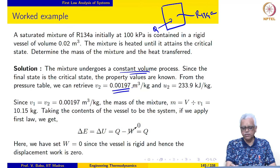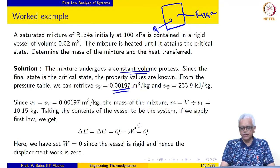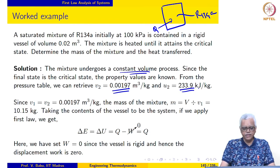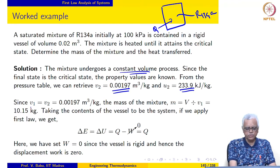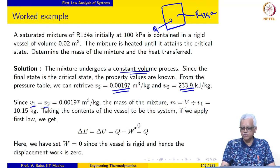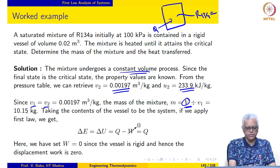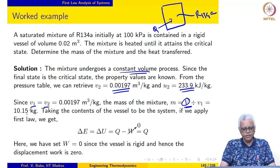The specific volume at the final state is 0.00197 meter cube per kilogram and the specific internal energy may also be retrieved from the pressure table. Since it undergoes a constant volume process, V1 is equal to V2 which is already known. The mass of the mixture may be evaluated from the given volume of the vessel: M equals V over specific volume, which gives us the mass to be 10.15 kilograms.